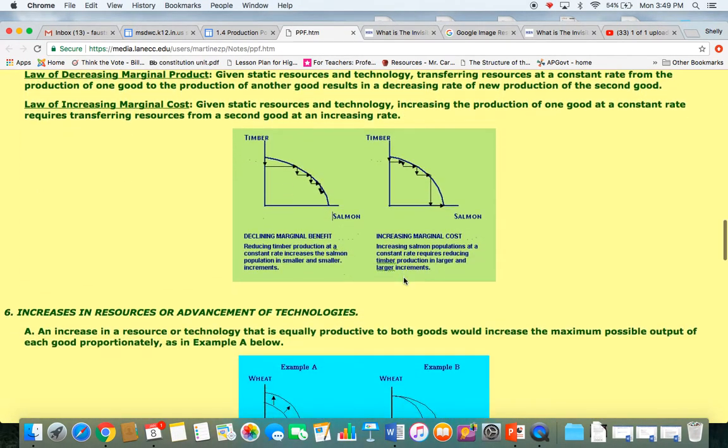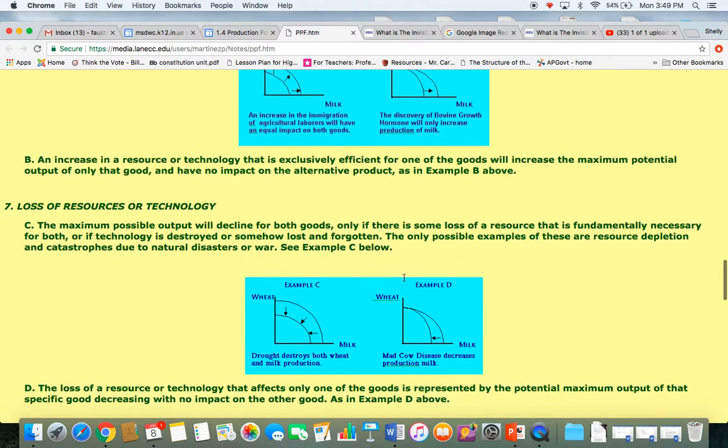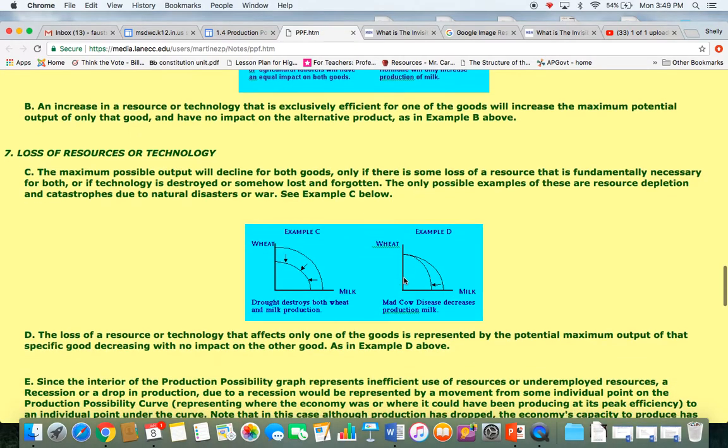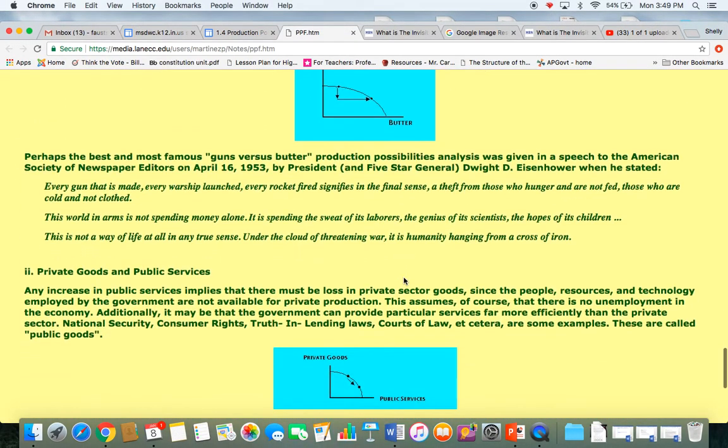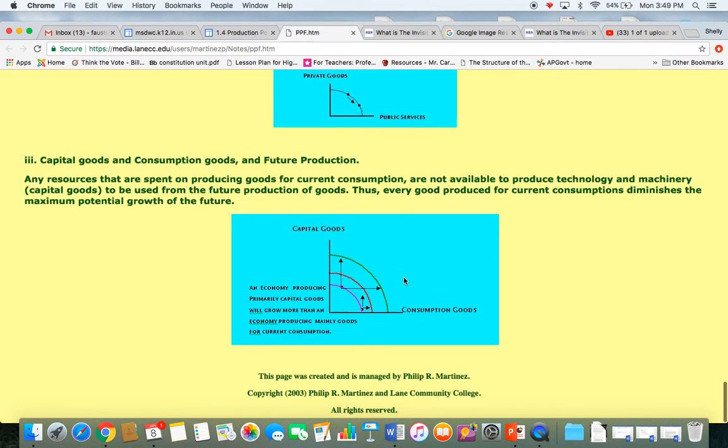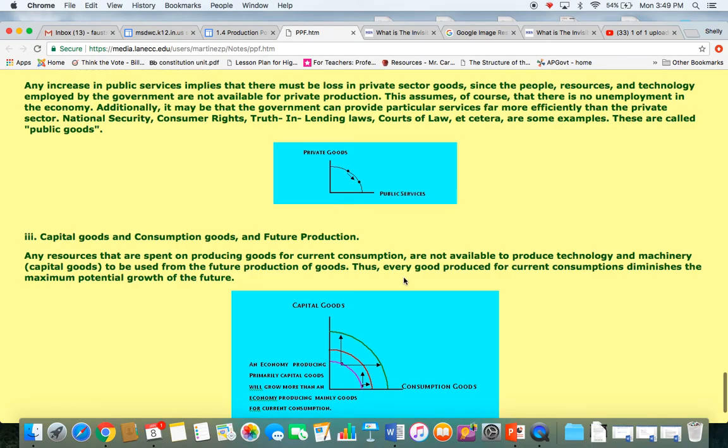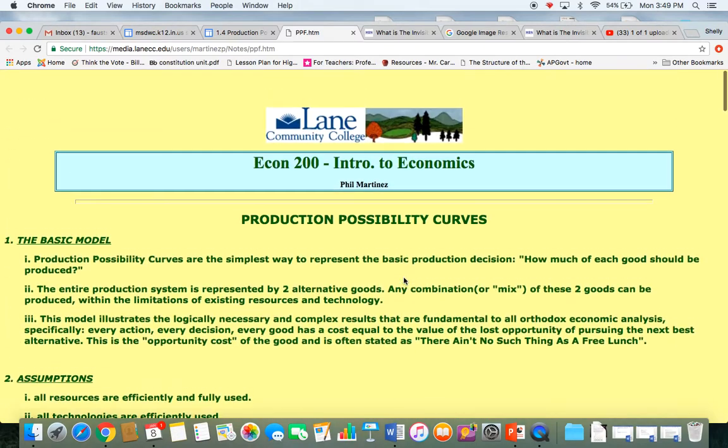It might look a little overwhelming, so I would actually use this more as a review tool. After you've watched the videos, then go back and look at each one of these examples. This basically has everything you need to know about the production possibility curves. Not necessary that you print it off, but everything that you're going to be tested over is on this piece of paper right here, or on this website right here.